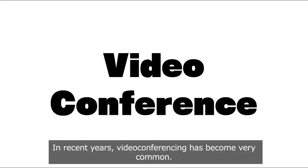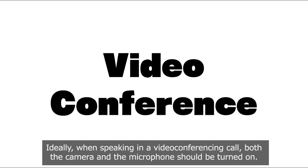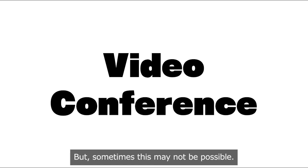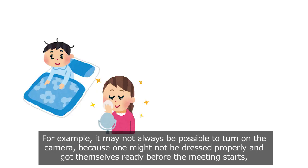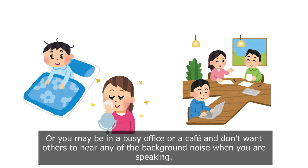In recent years, video conferencing has become very common. Ideally, when speaking in a video conferencing call, both the camera and microphone should be turned on. But sometimes this may not be possible — for example, one might not be dressed properly or ready before the meeting starts, or you may be in a busy office or a café and don't want others to hear background noise when you are speaking.